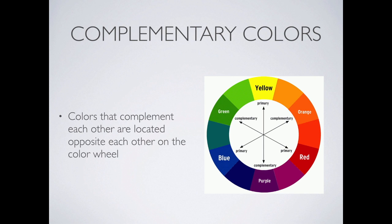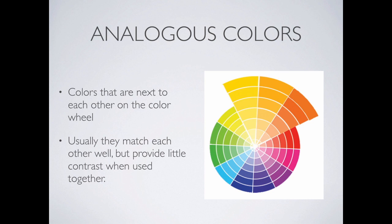We have something called complementary colors — colors that go well together because they're exactly opposite each other on the color wheel. The complement of yellow would be purple, the complement of blue would be orange, and the complement of red would be green. Analogous colors are colors that are next to each other on the color wheel. They match each other quite well, but they don't have a lot of contrast. If we look at a set of analogous colors, like a yellowy-orange group, they're all in kind of the same tone — they go well together but don't have a big focal point.